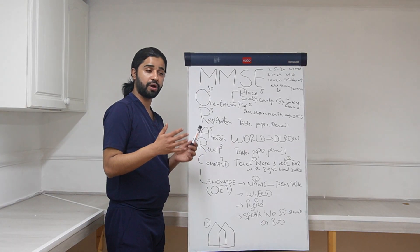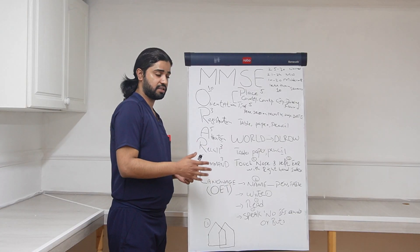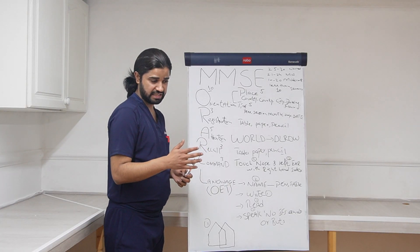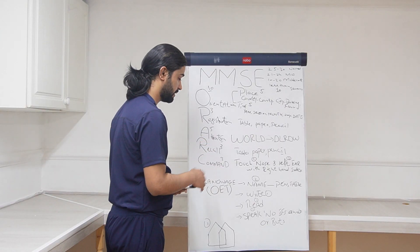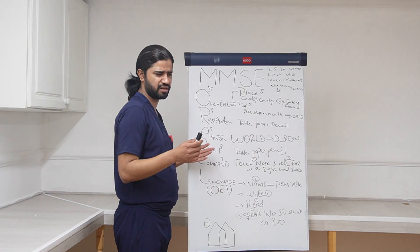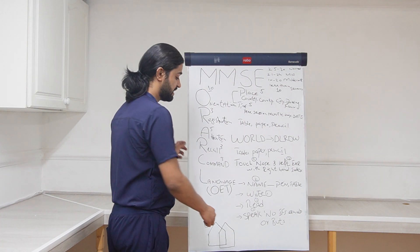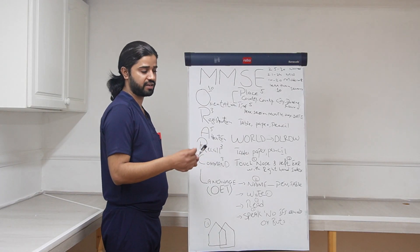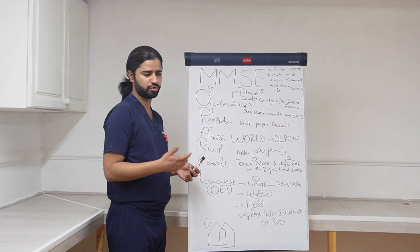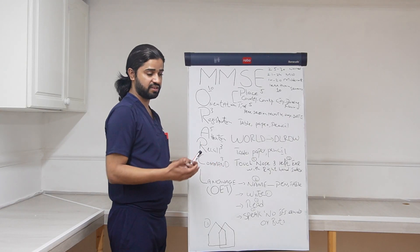Next is write. Ask the patient to write something meaningful on the paper. If he is able to write something meaningful, a meaningful sentence that has a verb and that makes sense, give him one mark. He can write 'sun is shining' or 'today's day is bright,' so give him one mark. Next is read. Give him paper, write something on the paper. You can write 'close your eyes' and ask the patient to read and follow the command. If patient is able to read and follow the command, that he is able to close the eyes, give him one mark.